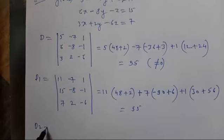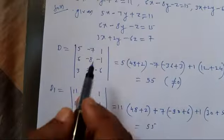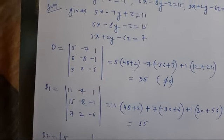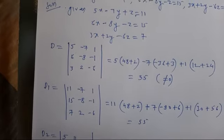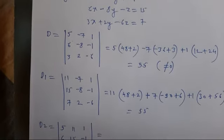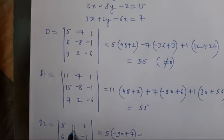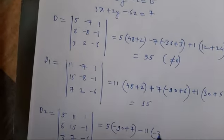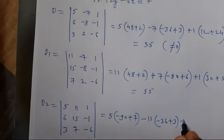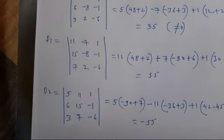Similarly I find D2. To find D2 I eliminate the middle column and replace it with [11, 15, 7], keeping columns 5, 6, 3 and 1, −1, −6. Simplifying: 5·(−90+7) minus 11·(−36+3) plus 1·(42−45), which gives D2 = −55.